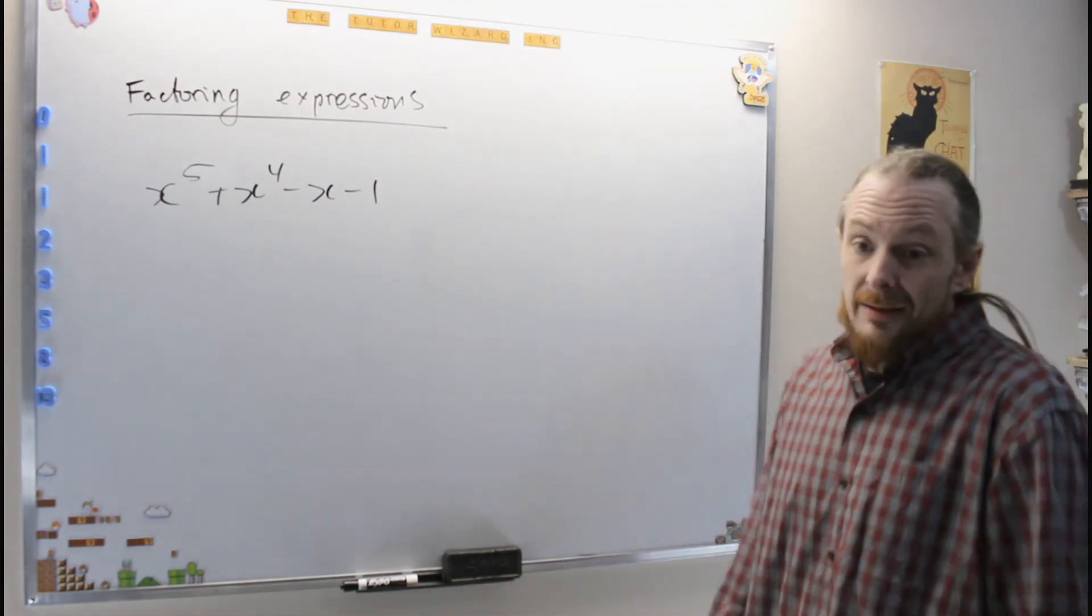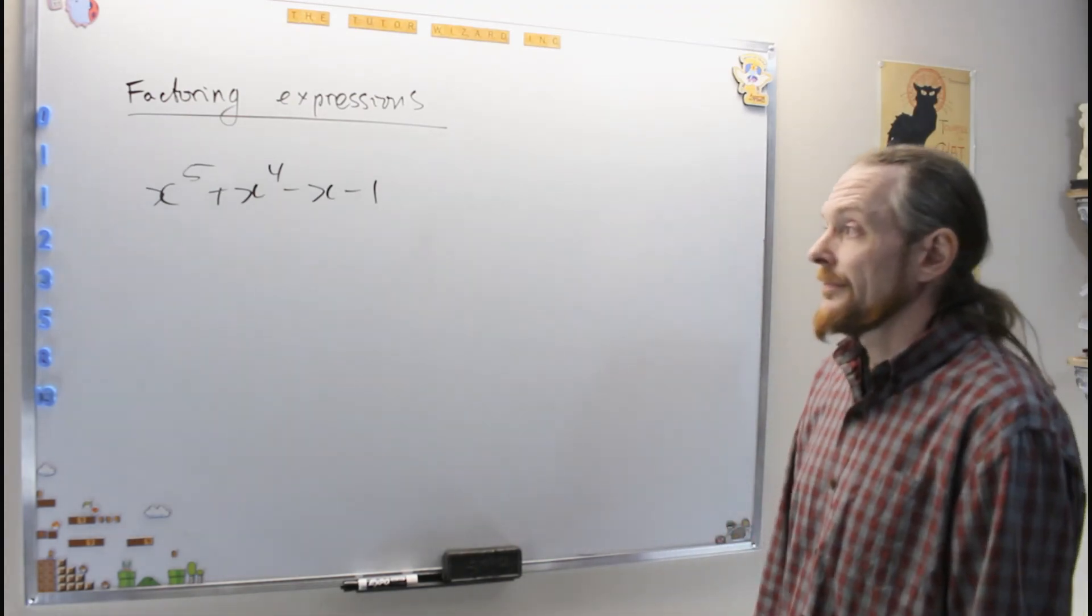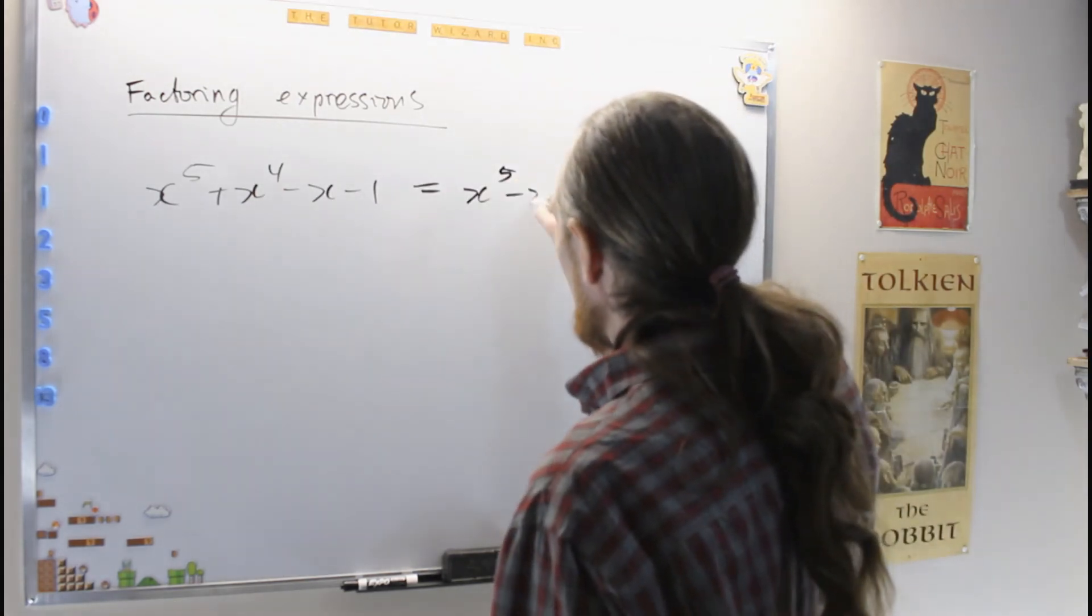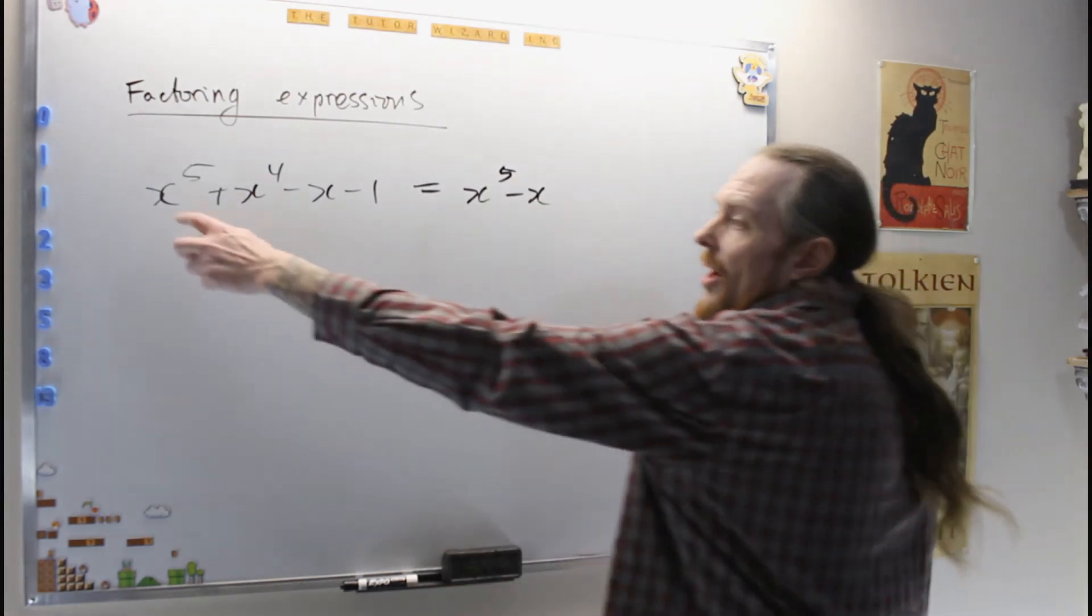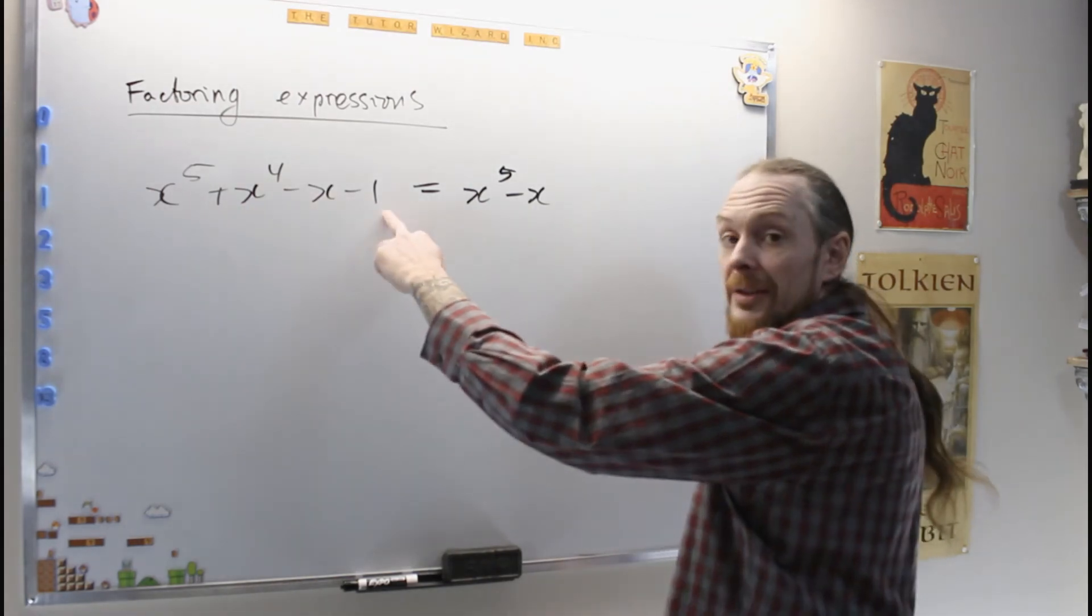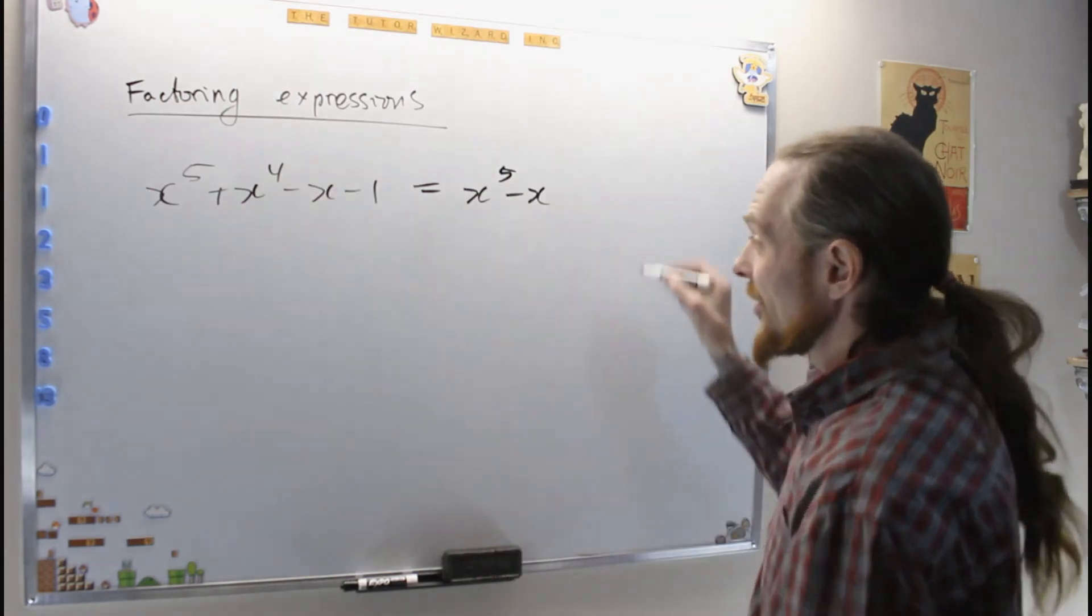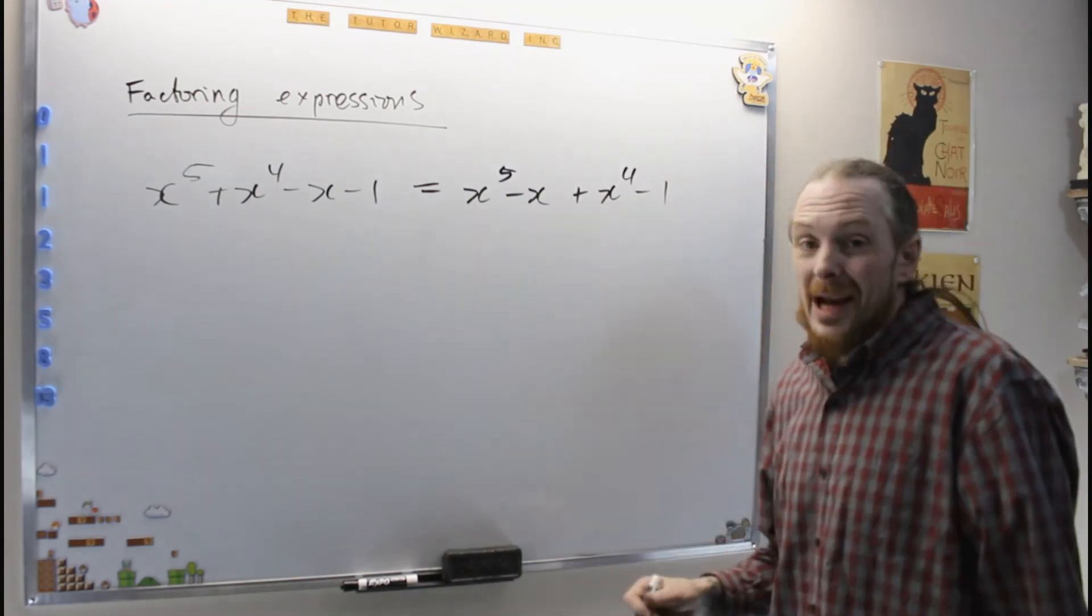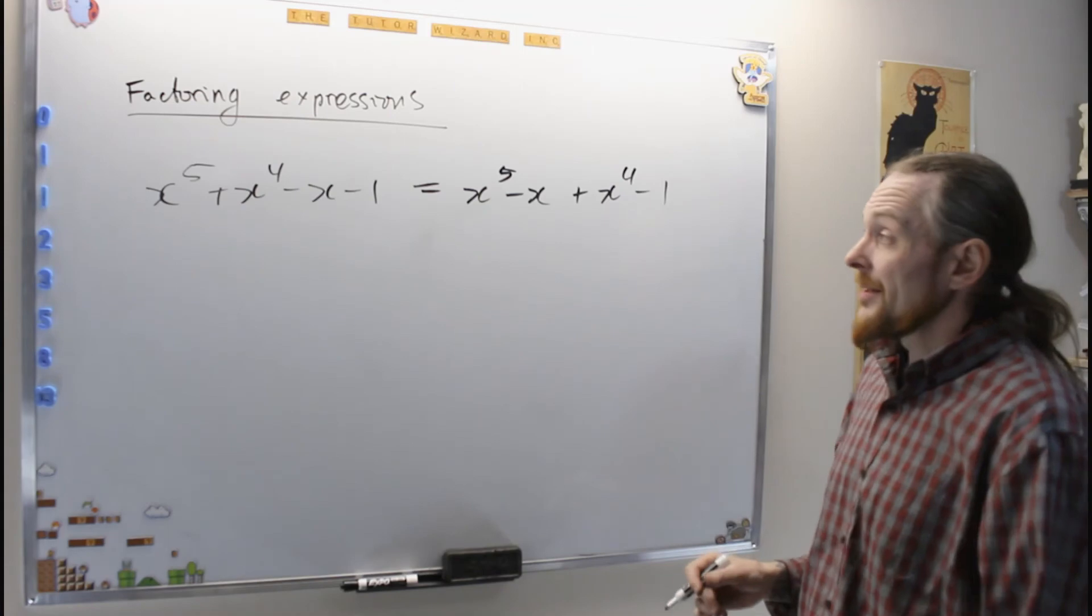So right now I just want to factor this, which is not easy in general, says Galois. So the first thing I'm going to do is write this cleverly. I see two odd terms and two even terms is essentially what I'm going to do first. So I'm just splitting it like this.